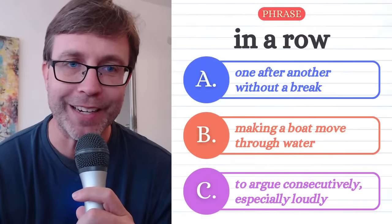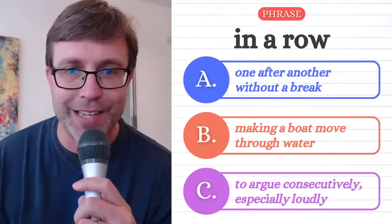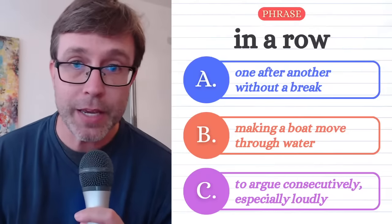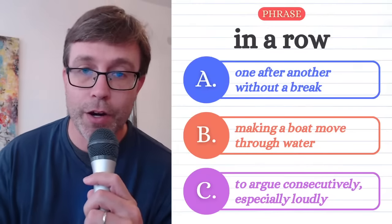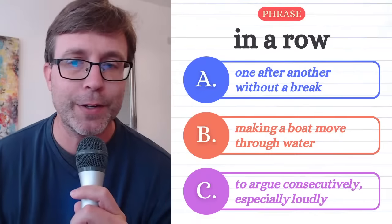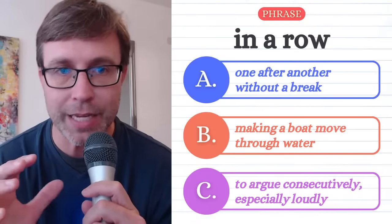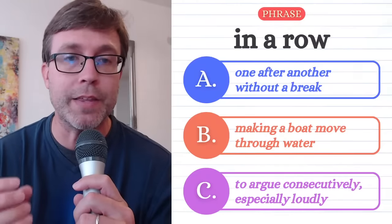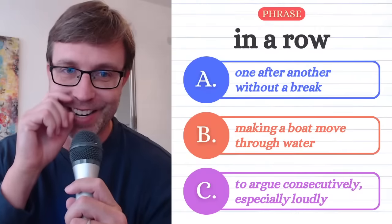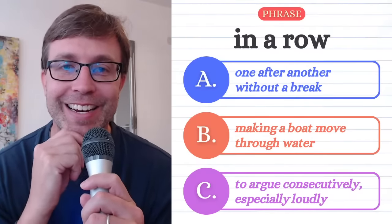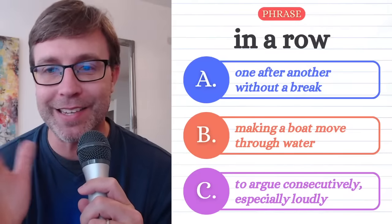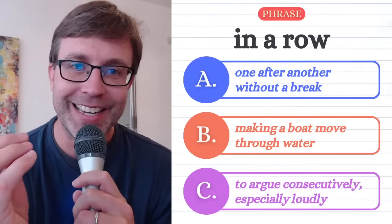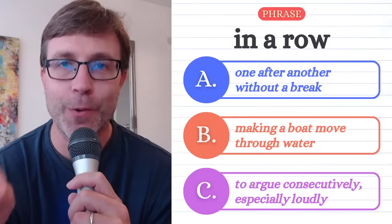The next phrase: 'in a row.' Is it A — one after another without a break? B — making a boat move through water? Or C — to argue consecutively, especially loudly? This is a B2 phrase, so don't be fooled — some words in this phrase have multiple meanings. The answer is A: one after another without a break.